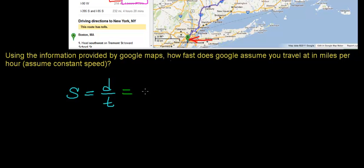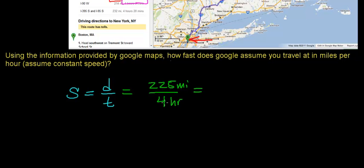In this case, the distance we're going to travel is 225 miles, and the time it takes to travel this 225 miles is going to be four hours. The next step is to divide 225 by four, which gives us 56.25, and our units are going to be miles per hour.